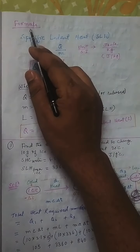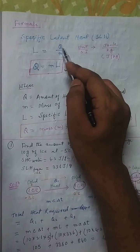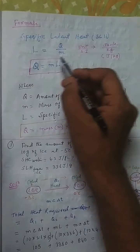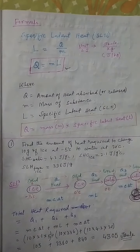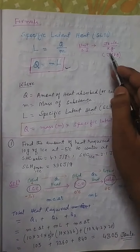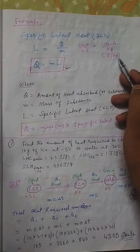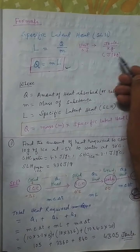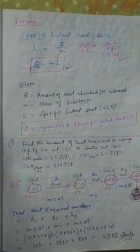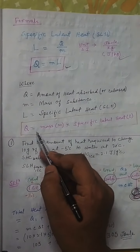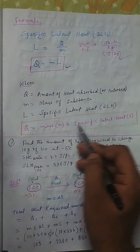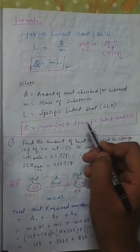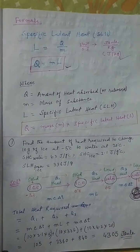What are the units of specific latent heat? Q is measured in joules and mass is measured in kilograms, so the unit for specific latent heat is joules per kilogram. The formula is Q equals M into L, that is, heat equals mass into specific latent heat.